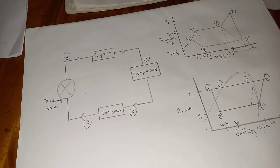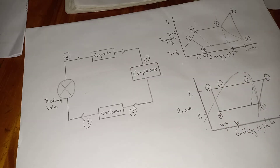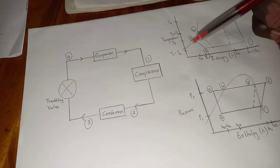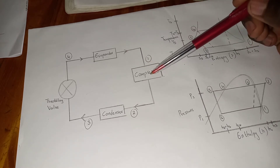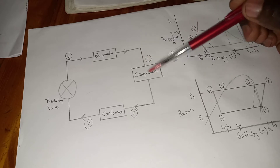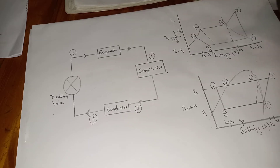What you have to keep in mind is that the mass of the refrigerant is kept constant throughout. Also, this process is an isentropic process, meaning the volume of the refrigerant is also kept constant. This constant volume will affect the formula for entropy.